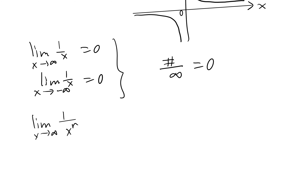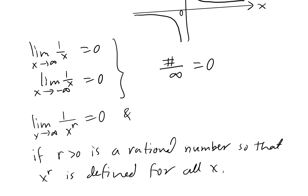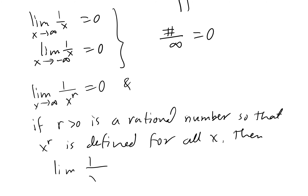As x approaches infinity, the limit of 1 over x to the r is 0. If r is positive and is a rational number such that x to the r is defined for all x, then the limit of 1 over x to the r as x approaches negative infinity is also 0.